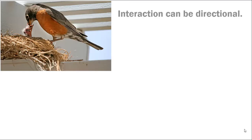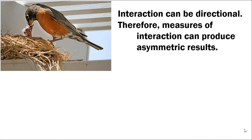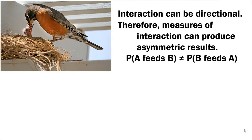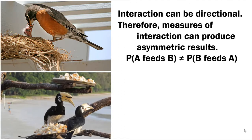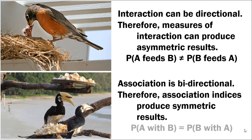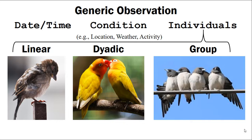Interaction tends to be directional. For example, feeding behavior goes from the adult bird to the newborn, so the probability the adult feeds the newborn may be high while the reverse is nearly zero. Since association assumes interaction based on co-occurrence, association indices produce symmetric results. If two hornbills arrive at a feeding station at the same time, the probability that A associates with B equals the probability that B associates with A. Some analytical techniques require a symmetric matrix, which matters when choosing your data mode.